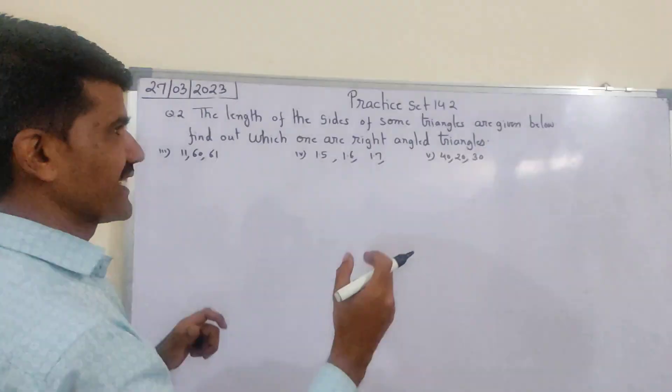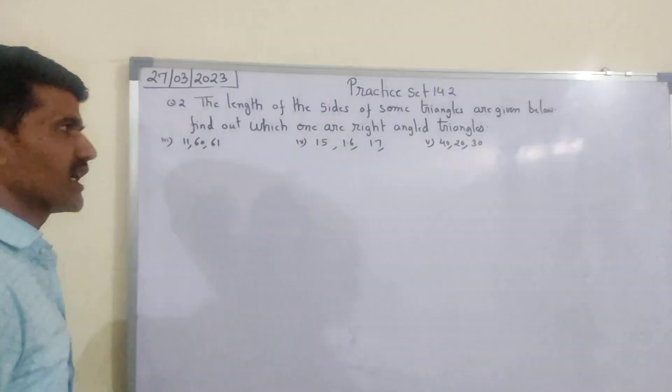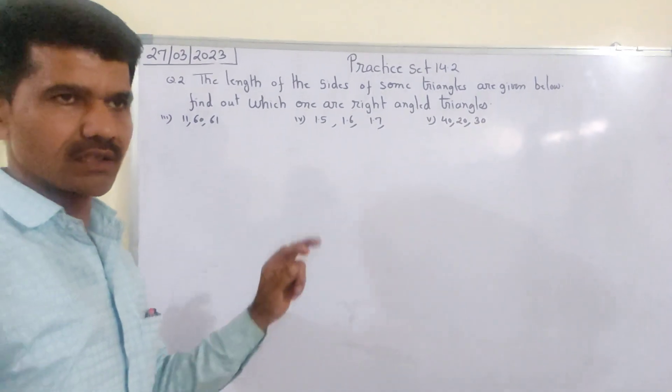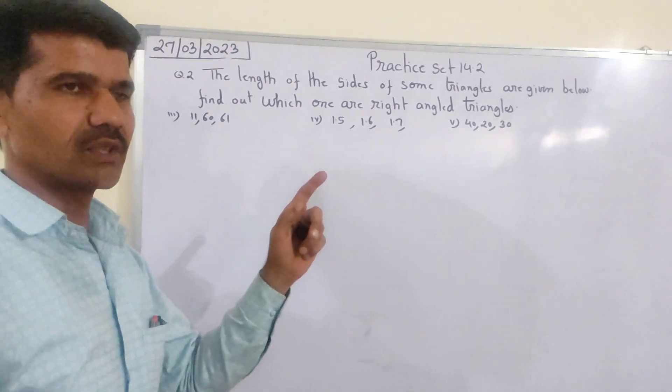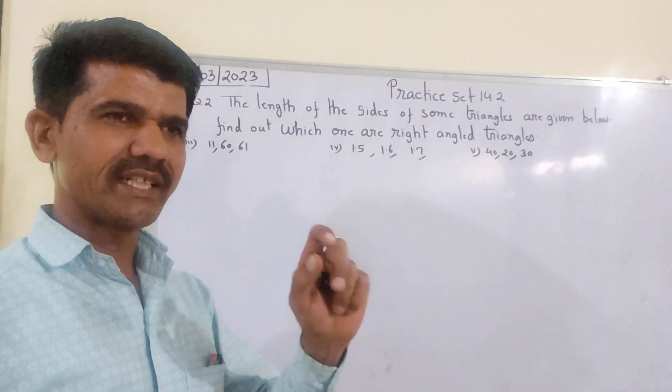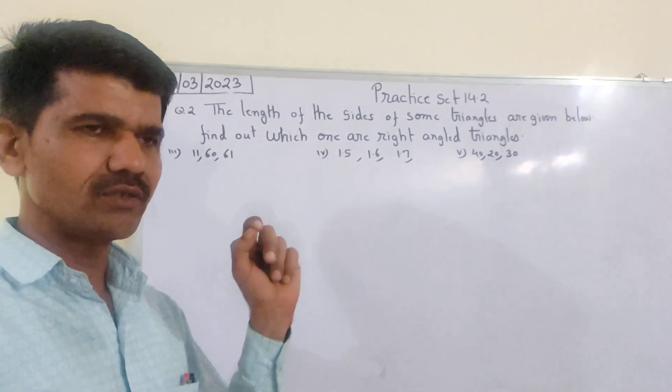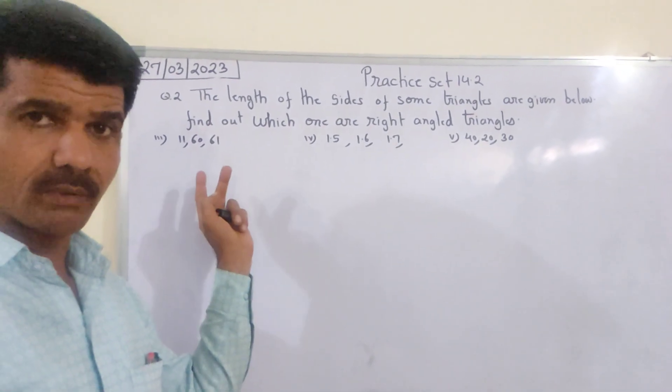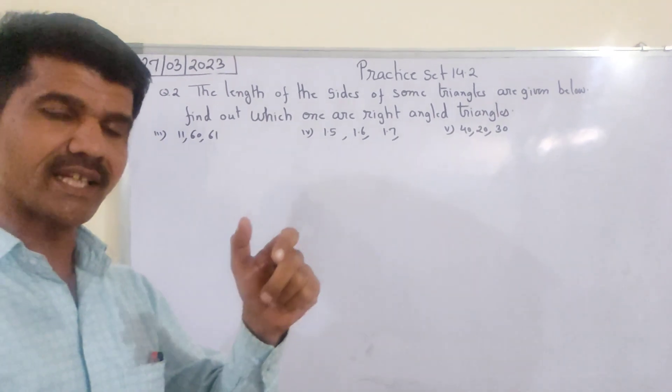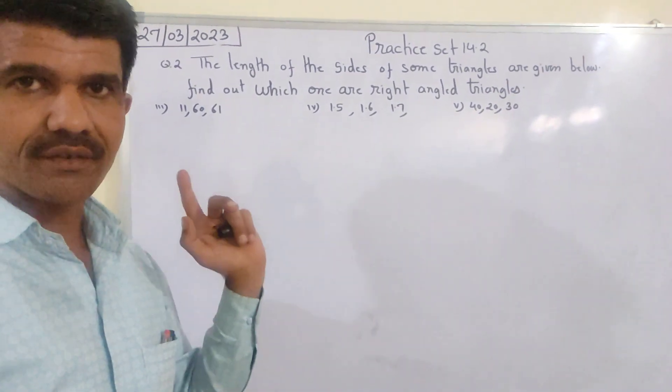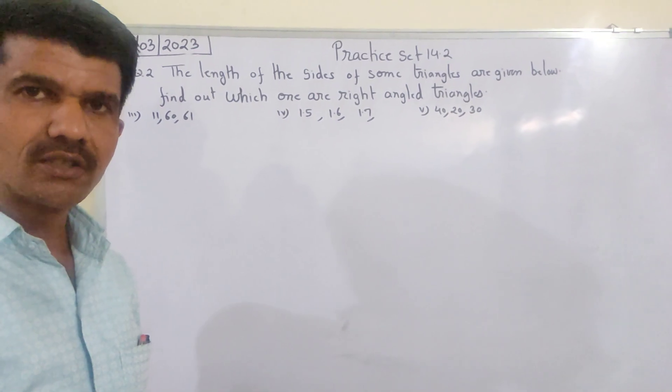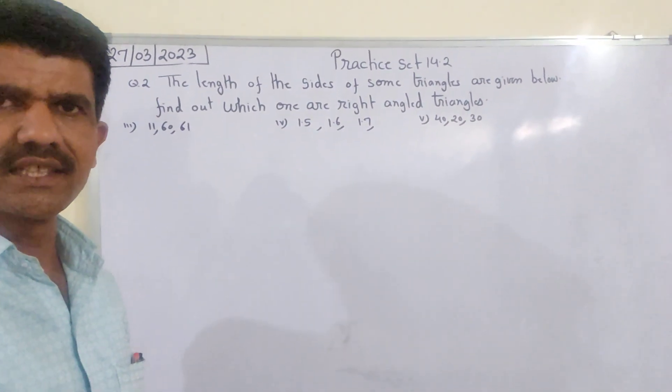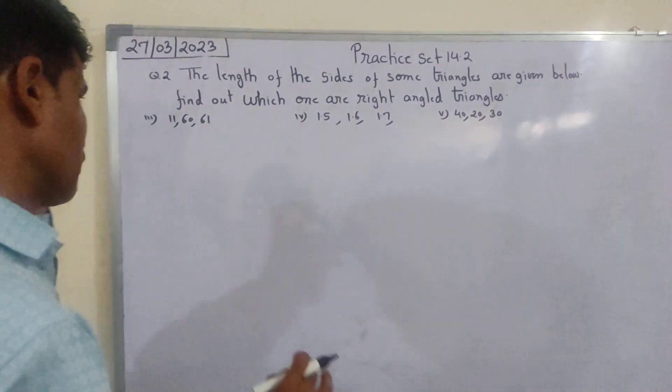The length of the sides of some triangles are given below, find out which are right angle triangle. Kal maine do samjha hai, teen bachche huye. Pythagorean triplets jaise hum solve karte hai, exact usi tarah solve karna hai. Agar same aata hai - bade number ka square aur do number ka square - toh kahi deena jo sides diye hai, wo right angle triangle ke. Agar same nahi aata hai, toh sidha bol deena that is not a right angle triangle. Chalo, solution.